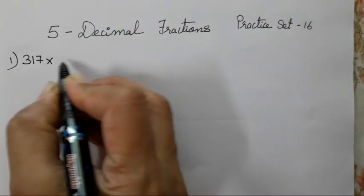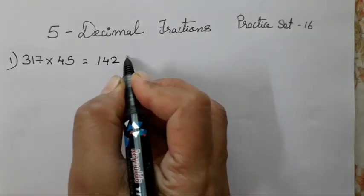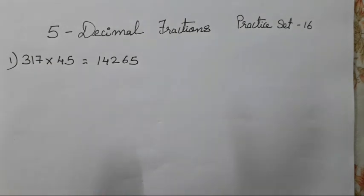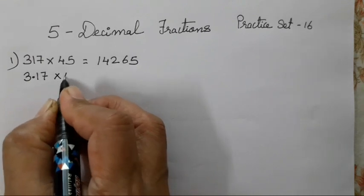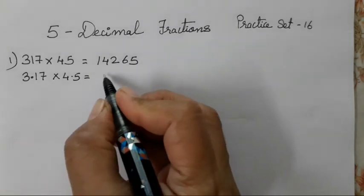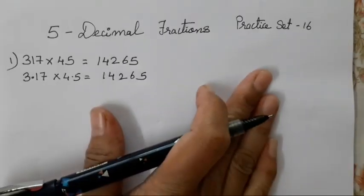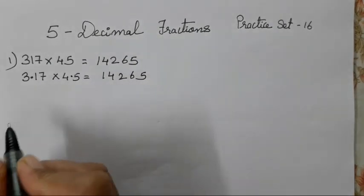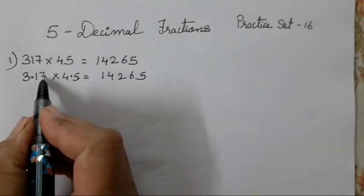For example, 317 multiplied — now this was 14265. If you are not understanding, follow page number 33 from your textbook. When you multiply this, the answer is already given. So, 3.17 into 4.5 — what is going to be the answer for this one? Obviously the same answer, because the numbers are the same. The answer is going to be the same. Now, if the answer is the same, we have to put a decimal point. After the decimal point: one digit here, so 1, 2, 3.